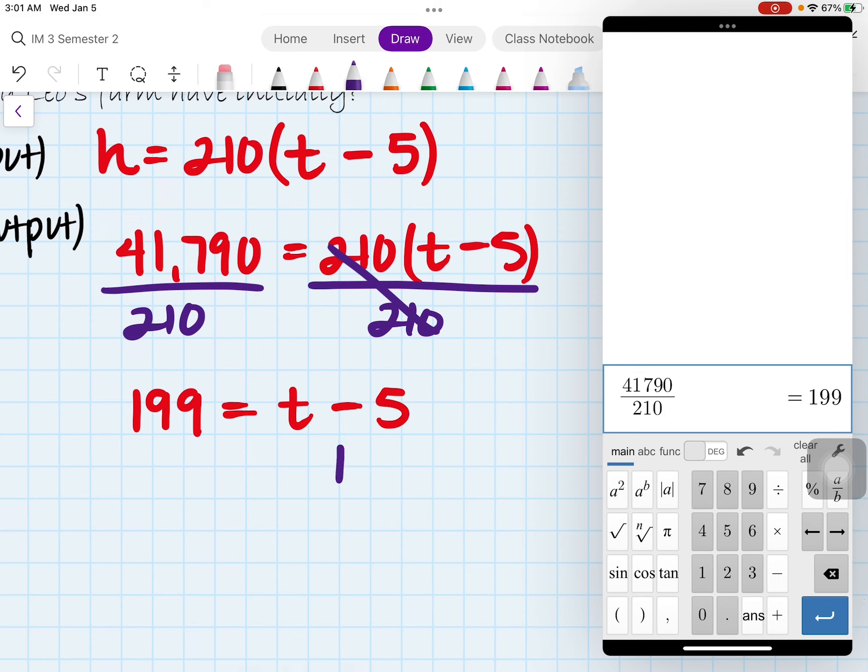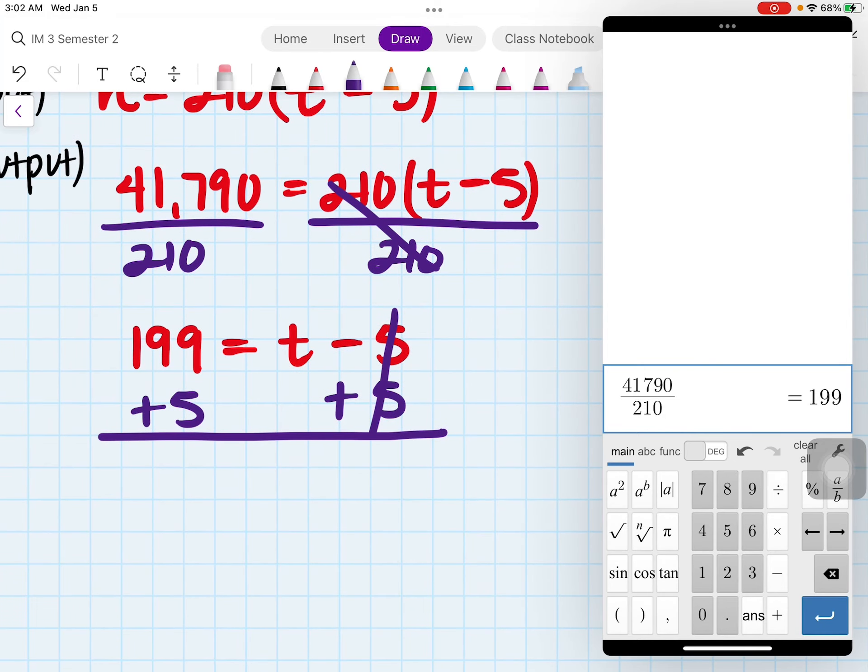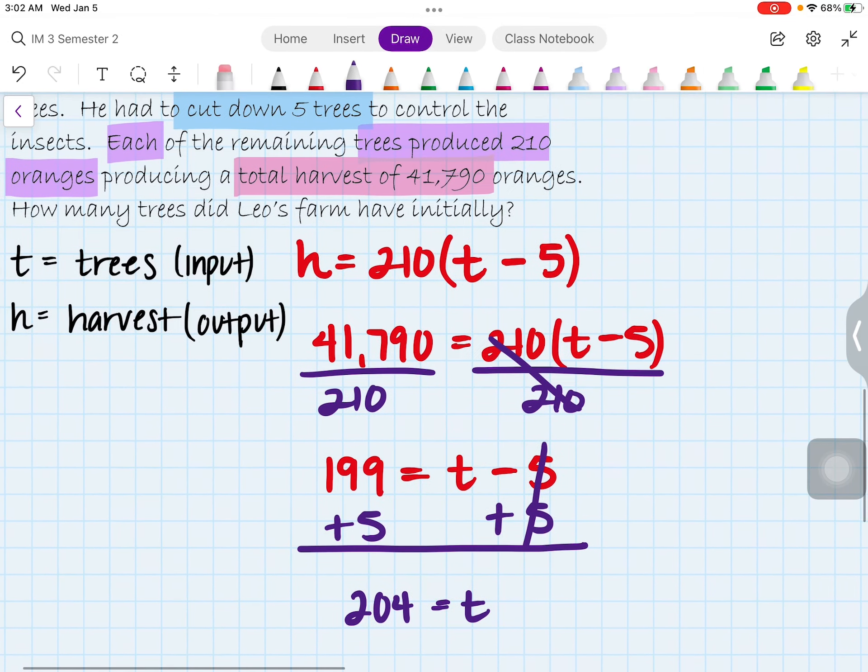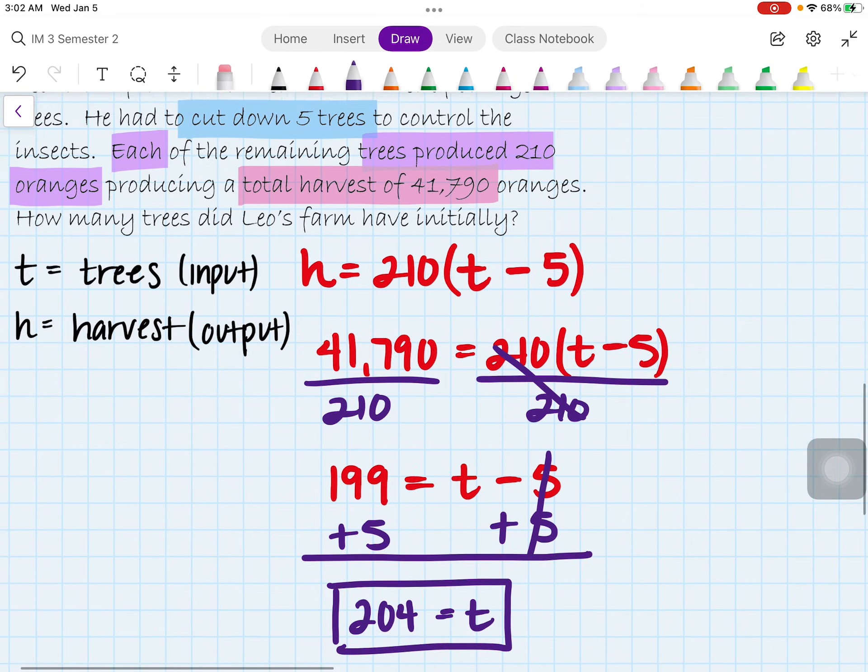All right, the goal in this case is to solve for t. So I'm going to move 5 to the other side by doing the opposite. And if I do 199 plus 5, that actually gives me 204. So in this case, the amount of trees we had at the beginning of the harvest were actually 204 trees, counting the ones we cut down.